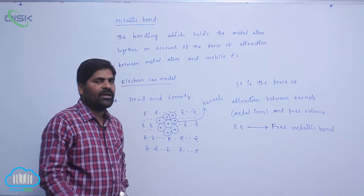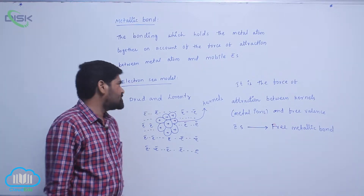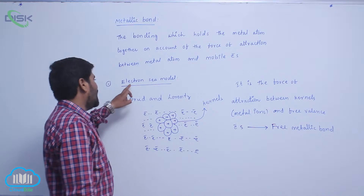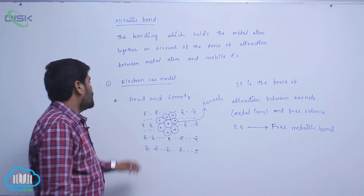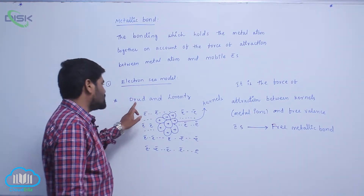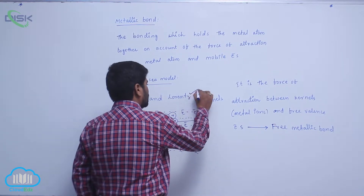The first important theory is the Electron Sea model. This theory was introduced by Drude and Lorentz.